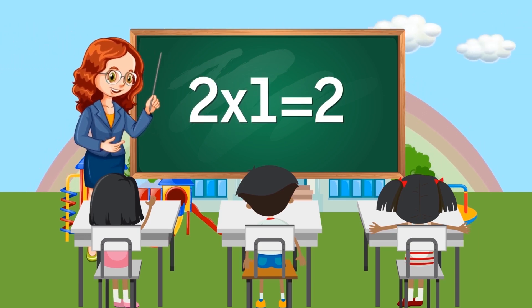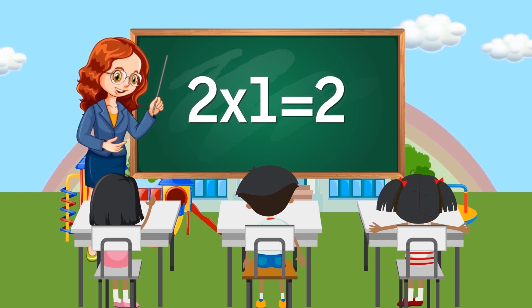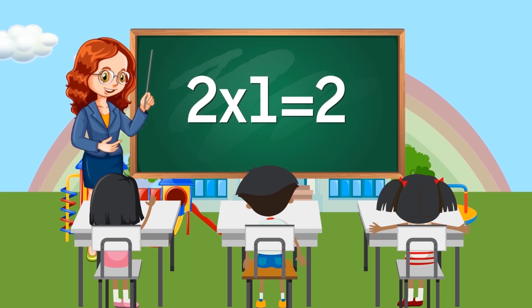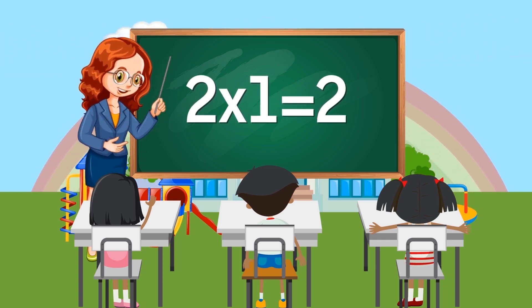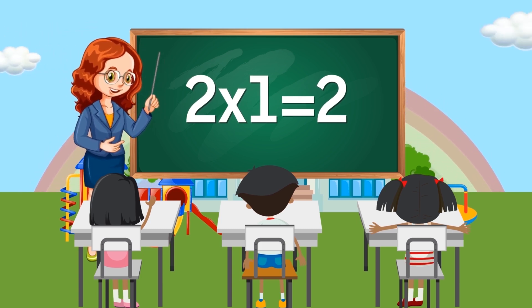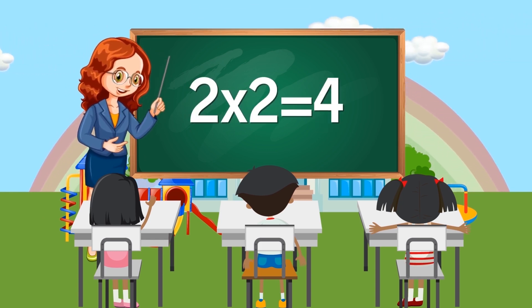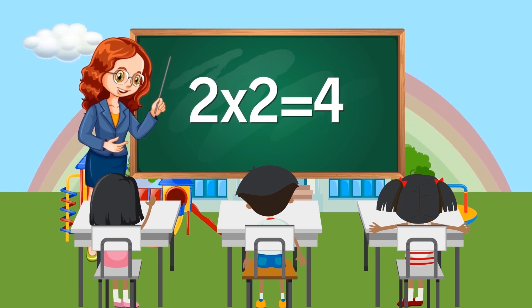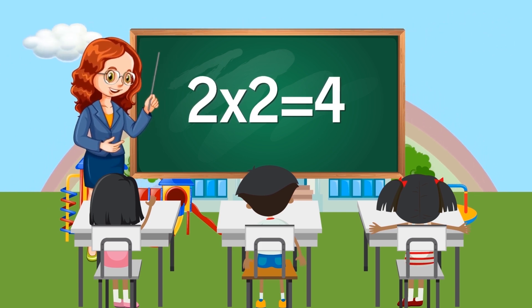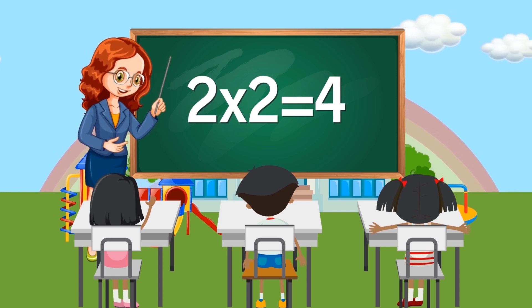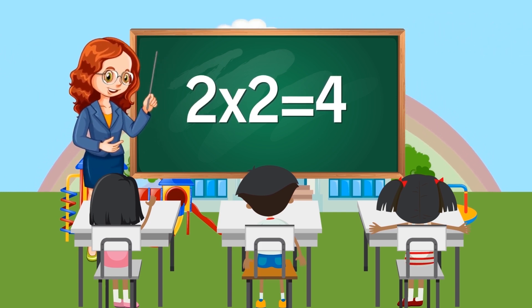Two times one equals two. Two times two equals four.